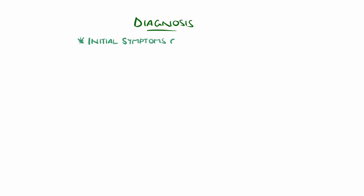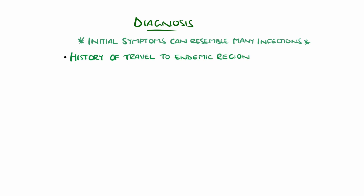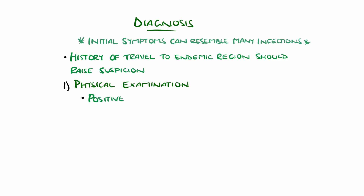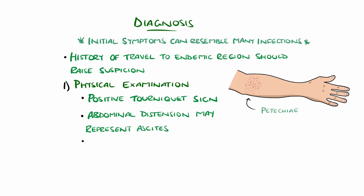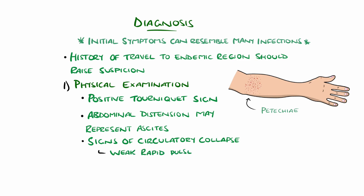Early diagnosis can be challenging as initial symptoms can resemble many other viral illnesses. A high index of suspicion is required, and travel history to endemic areas, especially within the last two weeks, should raise suspicion. Physical signs include a positive tourniquet sign — development of petechiae when a blood pressure cuff is applied between systolic and diastolic pressure for five minutes. Abdominal distension may represent ascites, and signs of circulatory collapse include tachycardia, prolonged capillary refill time, cold clammy skin, and reduced urinary output.